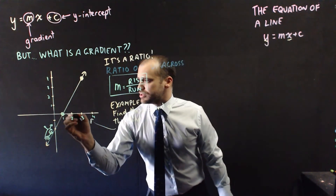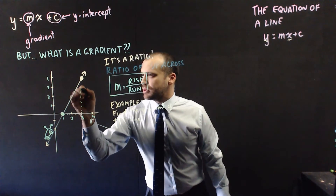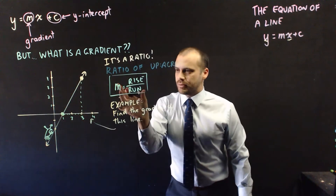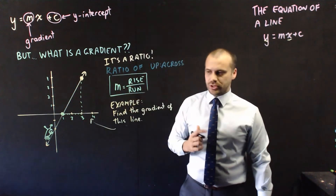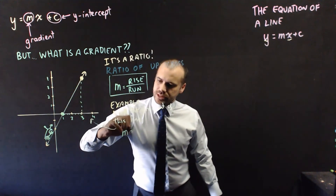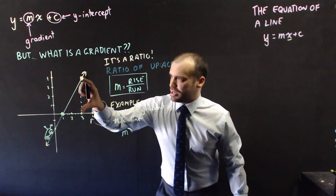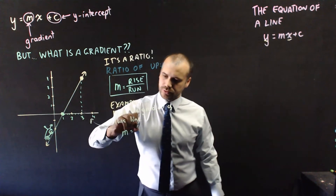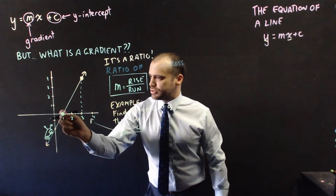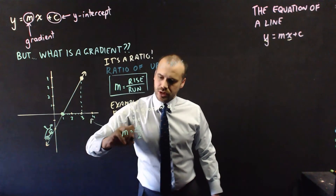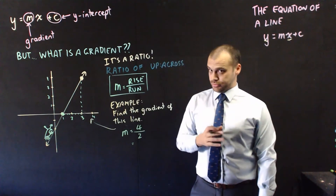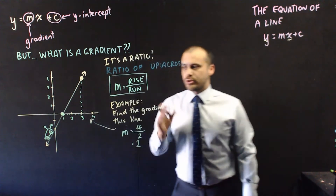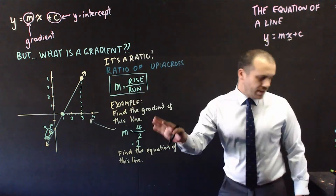Using the formula: gradient equals rise over run. How far did I go up? 1, 2, 3, 4. How far did I go across? 1, 2. The gradient equals 4 over 2. If we simplify that, 4 divided by 2 is 2. The gradient of that line is 2.